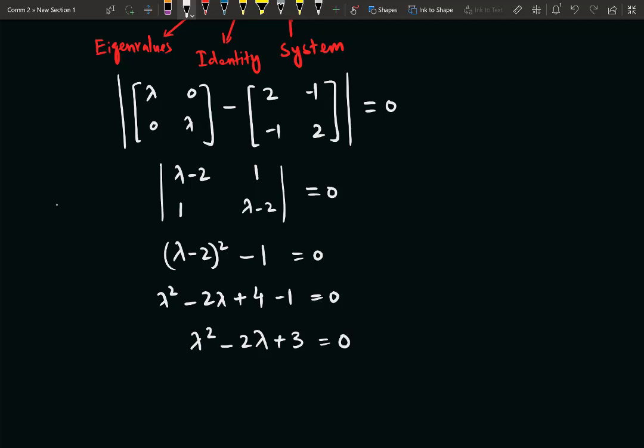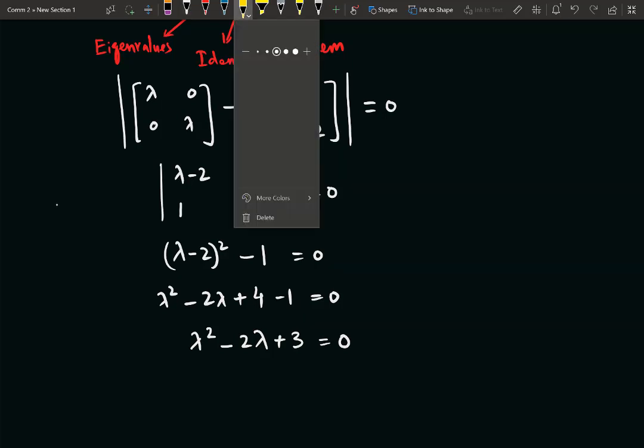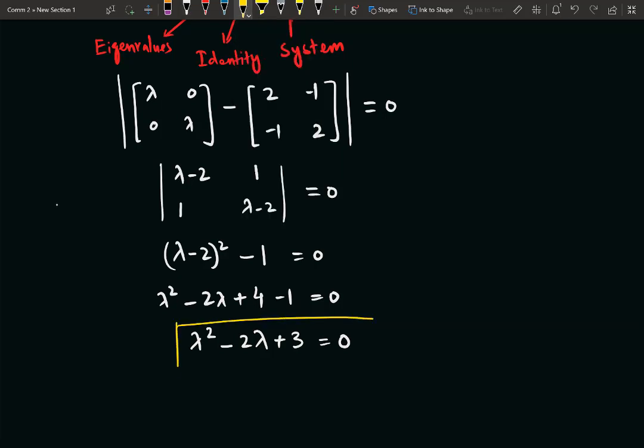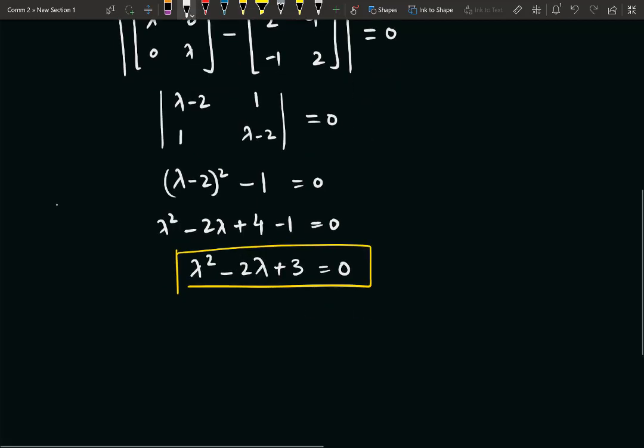Now this is the characteristic equation which we need to solve, and the solution of this characteristic equation comes out to be (λ-1)(λ-3) = 0.